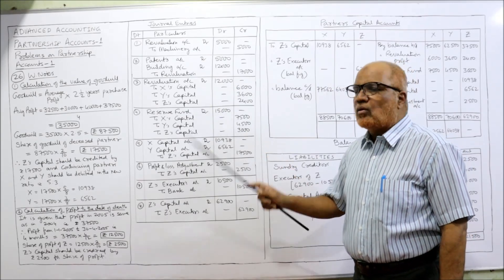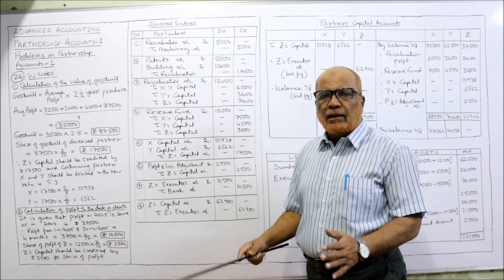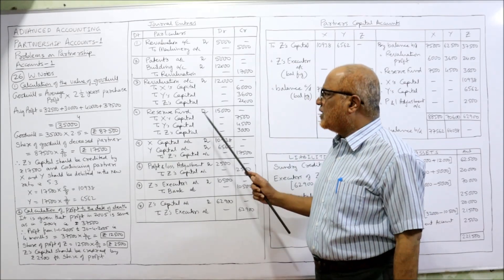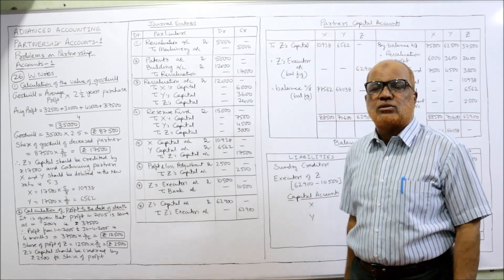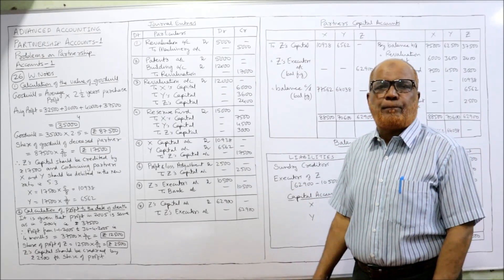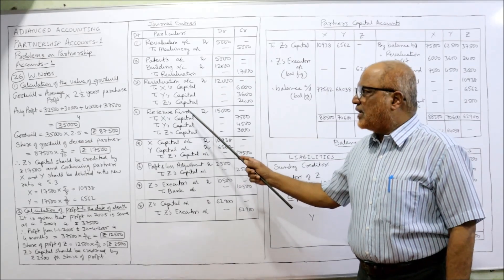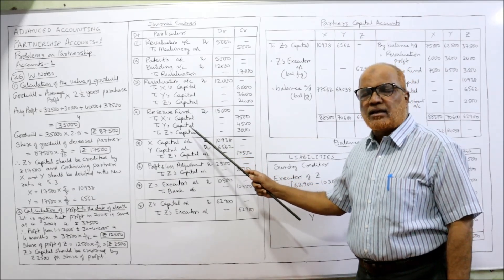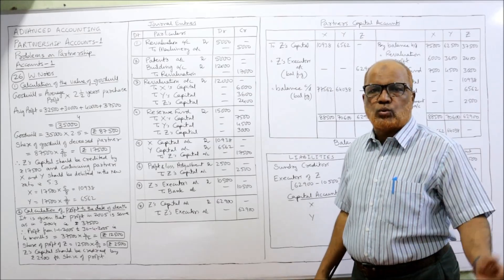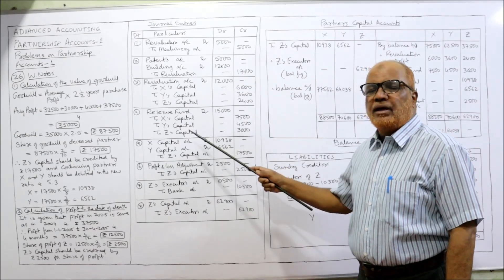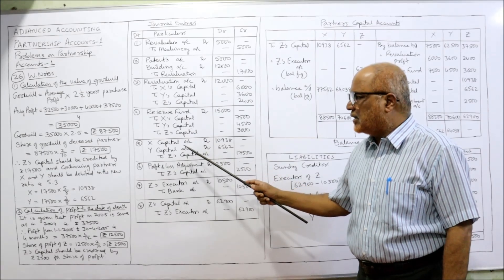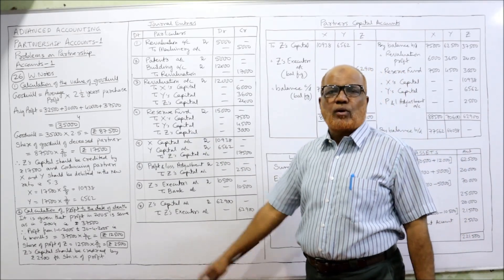Reserve fund: at the time of death there is a reserve fund of 15,000 in the balance sheet. This should be distributed among all partners. Entry: Reserve Fund Account Dr. to X Capital, Y Capital, Z Capital in the old profit sharing ratio of 5:3:2. Being the reserve fund shared by all the partners.